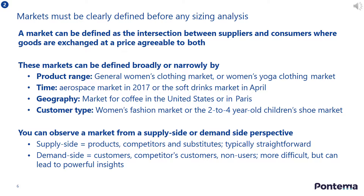Markets can be defined broadly or narrowly based on different attributes, such as product range, time, geography, or customer type. For example, a clothing retailer could define its market broadly as women's clothing, or more narrowly as women's yoga clothing. It really depends on which consumers the organization is targeting.